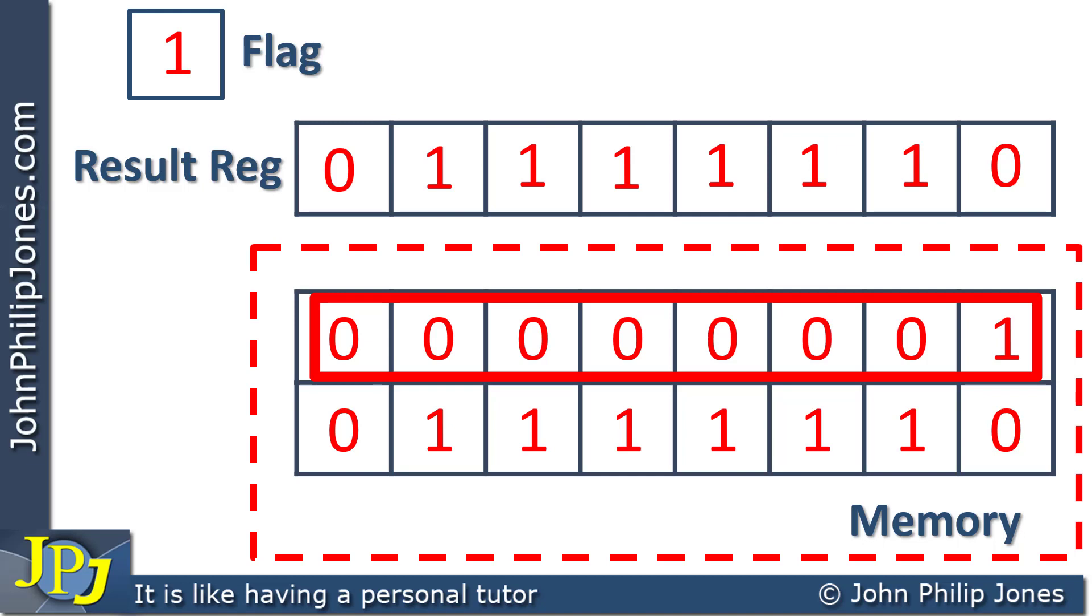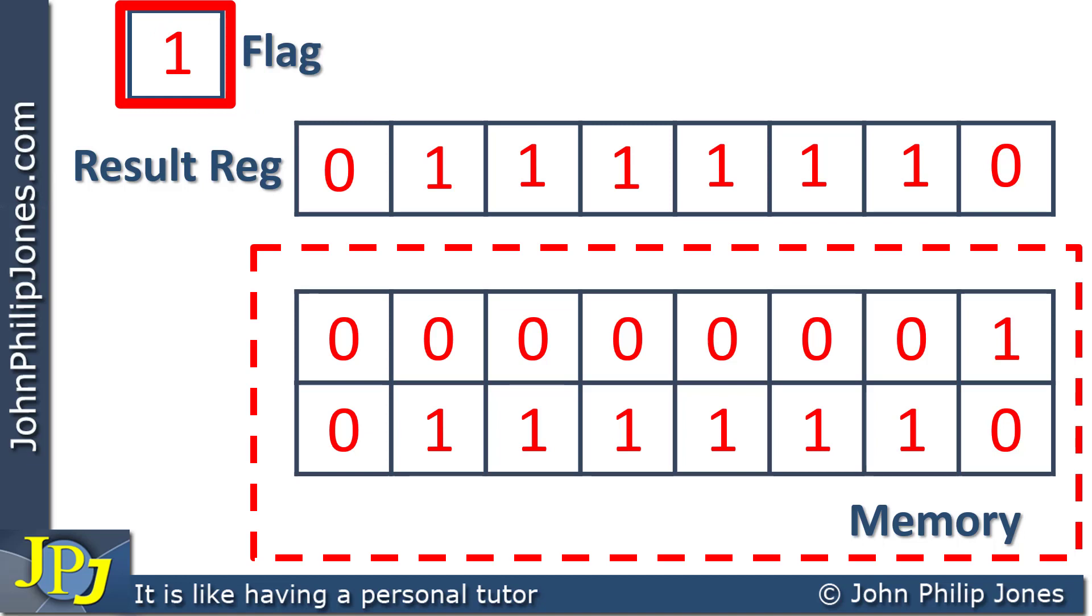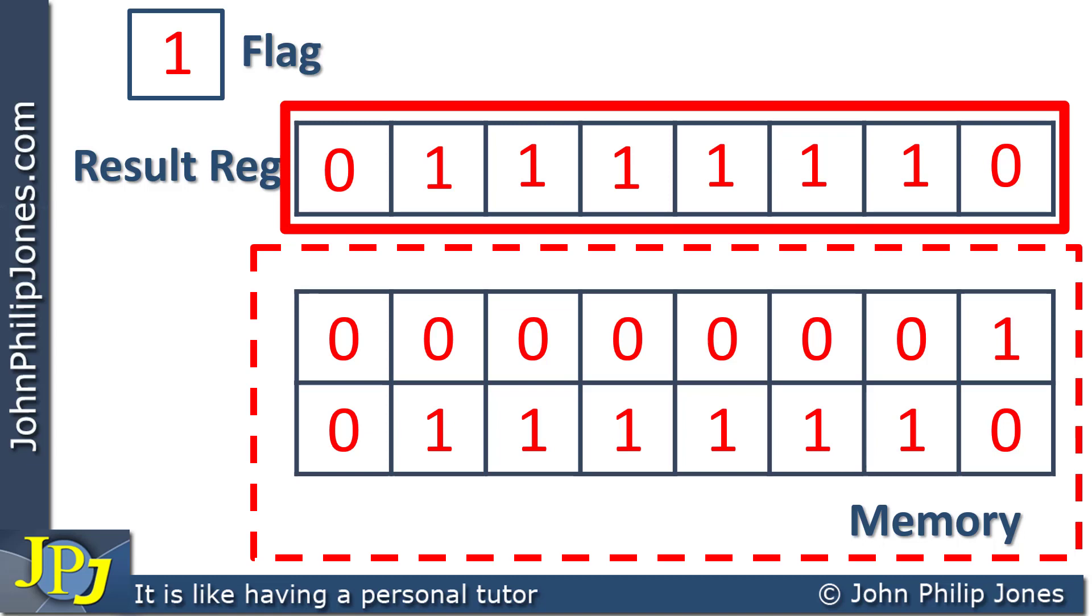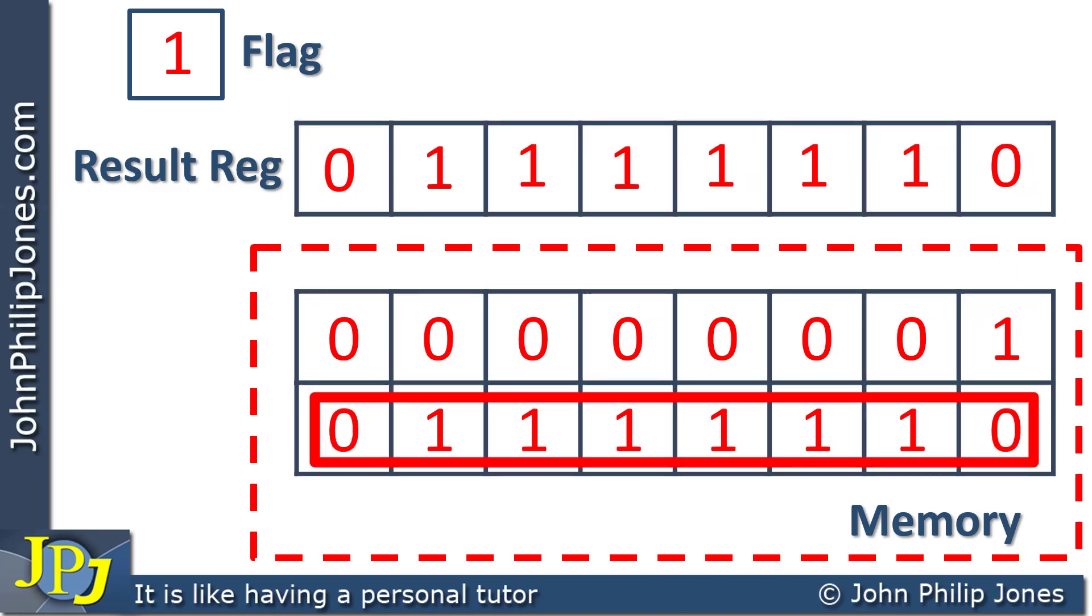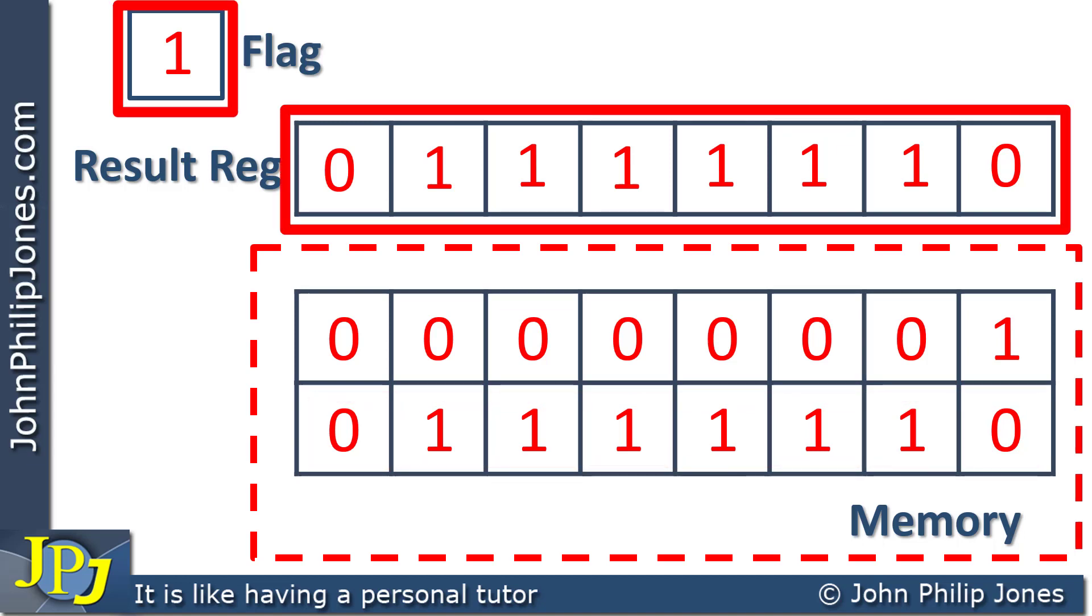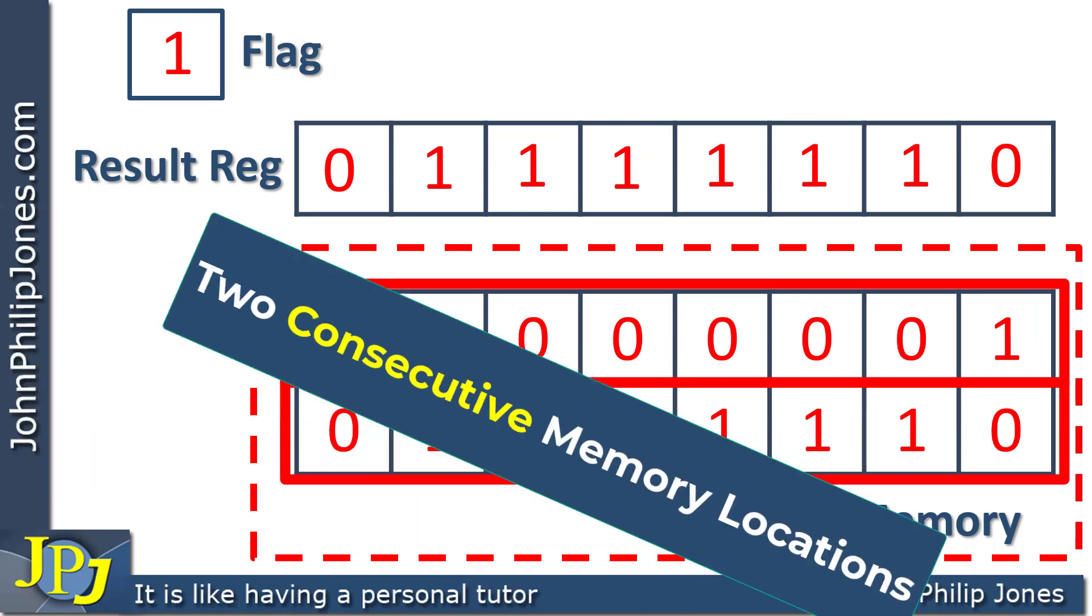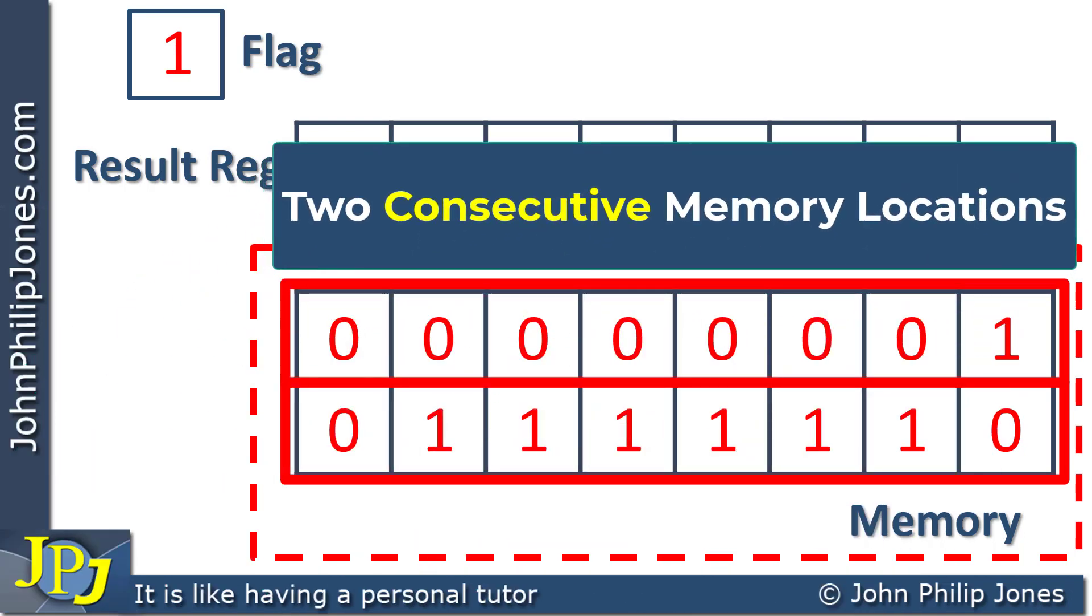And the computer will know to do this. We don't have to worry about it. This will be done by the machine code. So when you decide to store this flag in a memory, it sticks all these zeros here. Have a look at the result register and its content. And you can see that is stored here. Consequently, the 9-bit answer has been stored across two consecutive memory locations.